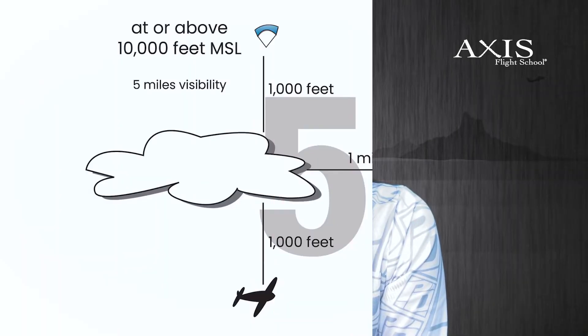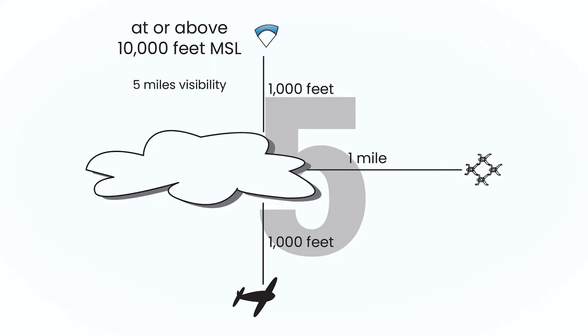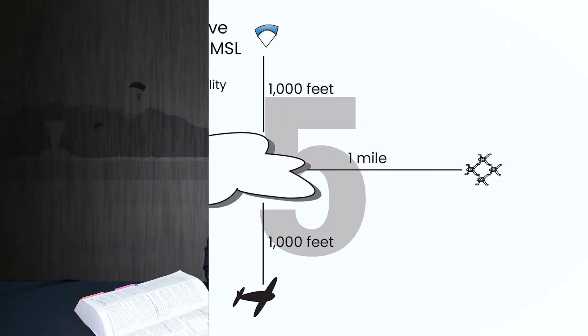Some people find it helpful to use a mnemonic device in order to remember the cloud clearance rules. If you are above 10,000 feet, you are required to have 5 miles visibility, stay 1,000 feet above, 1,000 feet below, and 1 mile horizontal distance away from the nearest cloud. Remember these numbers by thinking of the parachute fabric F-111 — the F stands for 5 miles.